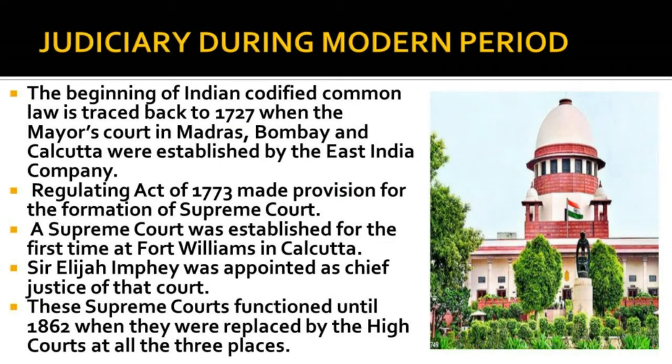Judiciary during the modern period. The Indian judicial system and laws we act by today were formed by the British during colonial rule. The beginning of Indian codified common law is traced back to 1727, when the mayor's courts in Madras, Bombay, and Calcutta were established by the East India Company. The Regulating Act of 1773 made provision for the formation of the Supreme Court. A Supreme Court was established for the first time at Fort William in Calcutta, and Sir Elijah Impey was appointed as Chief Justice. In 1801 and 1824, Supreme Courts were established in Madras and Bombay, functioning until 1862, when they were replaced by High Courts.